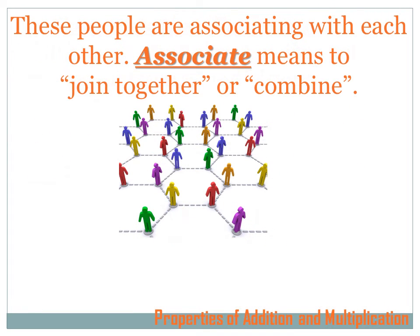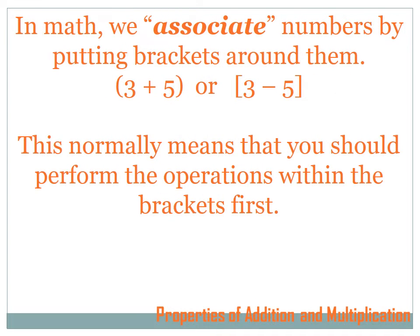Another property we're going to discuss today is the associative property of multiplication and addition. People in this picture are associating. Associate means to join together or to combine. In math, we associate numbers by putting brackets around them — for example, bracket 3 plus 5 bracket, or bracket 3 minus 5 bracket.